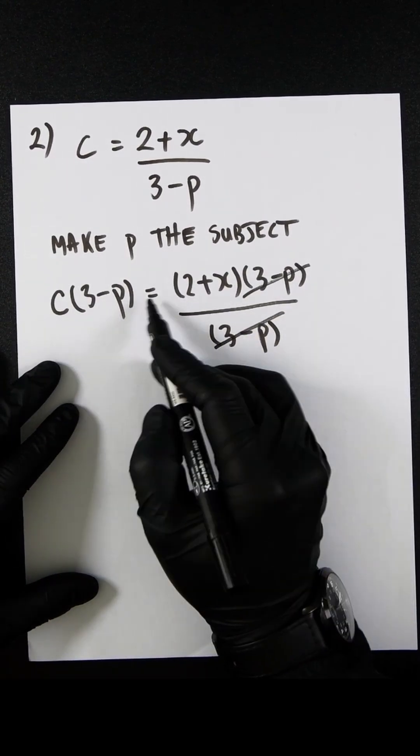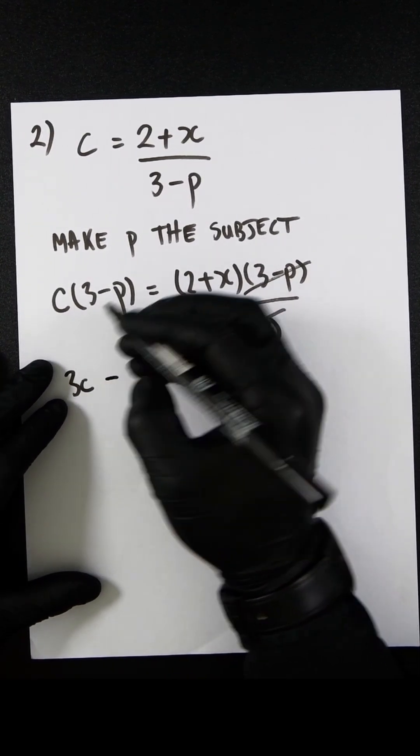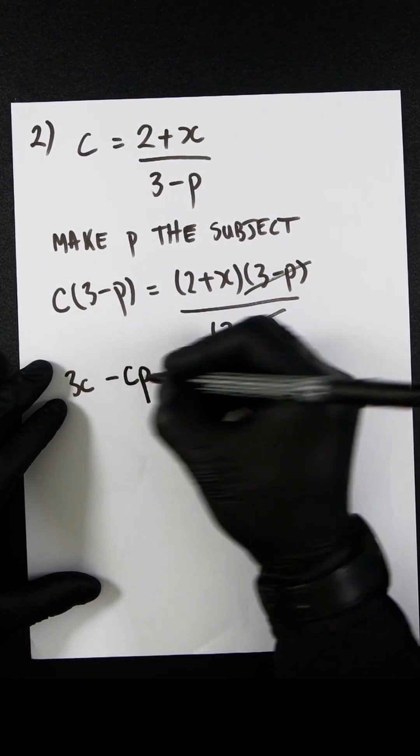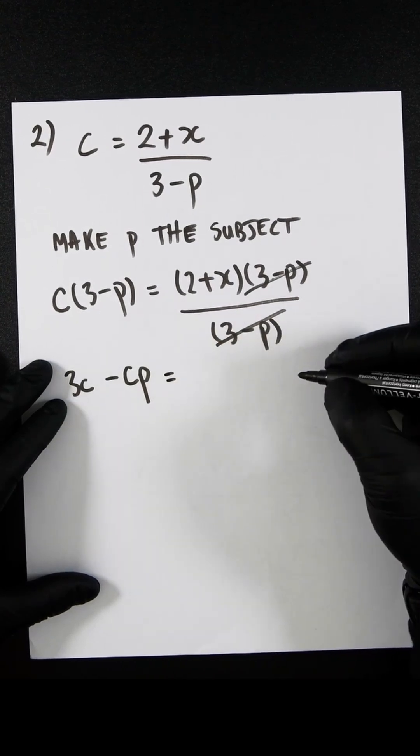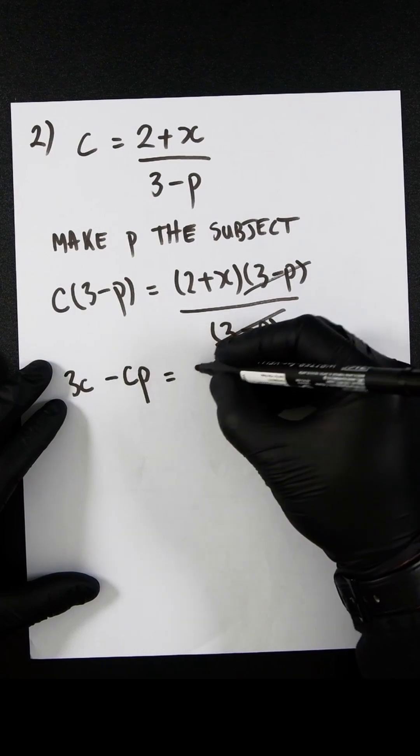Now we can expand the brackets. C times 3 is 3c, and C times minus p is minus cp. This leaves 2 plus x on the right hand side.